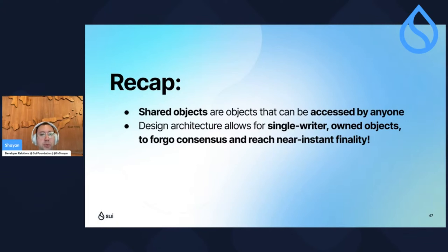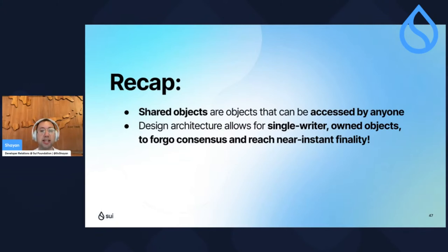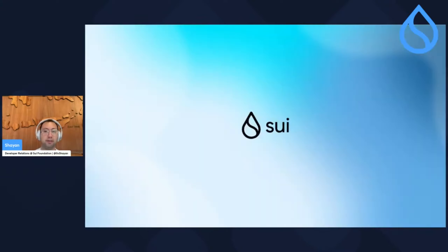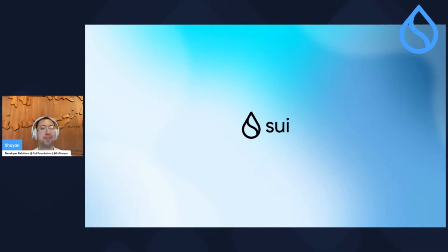Just to recap: shared objects are objects that can be accessed by anyone. SUI's design architecture is unique in that it allows single-writer owned objects to forego consensus altogether and reach near-instant finality.